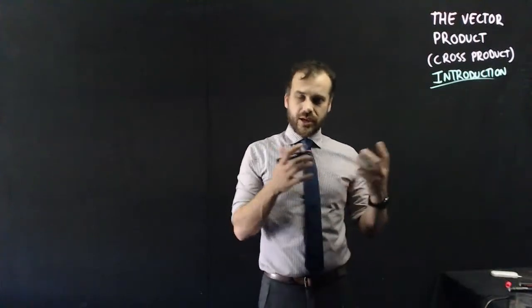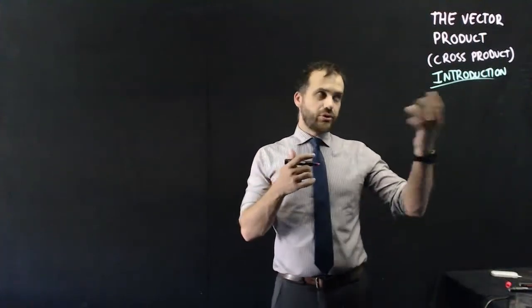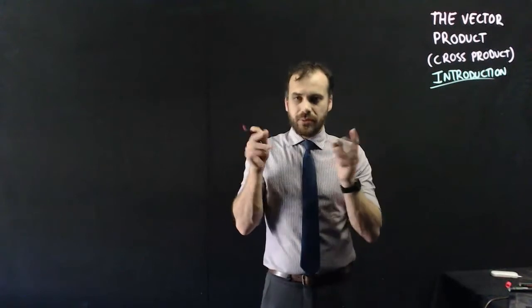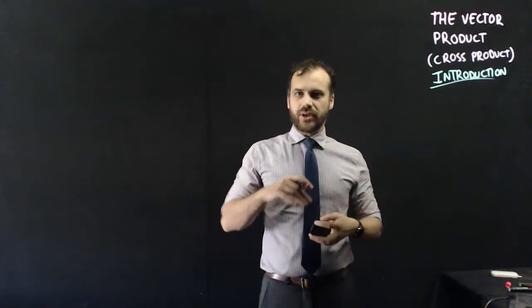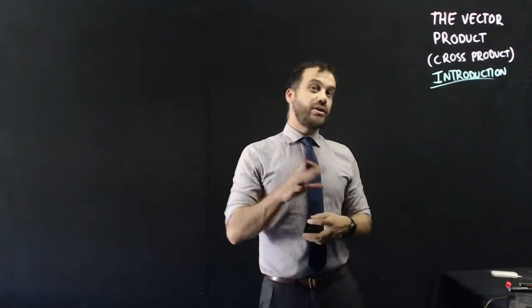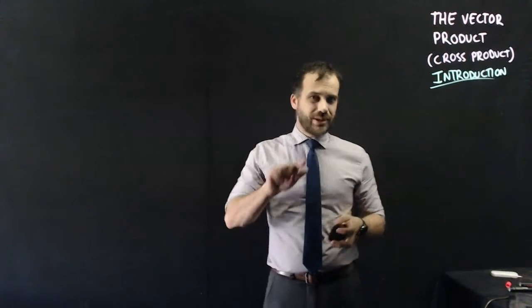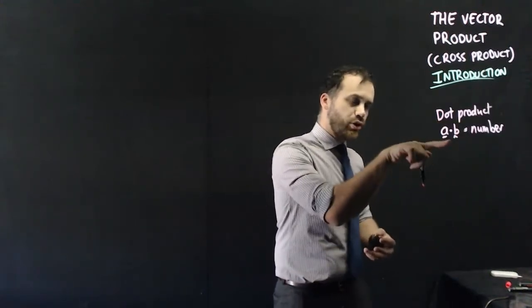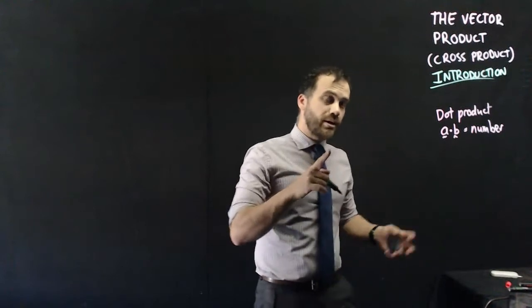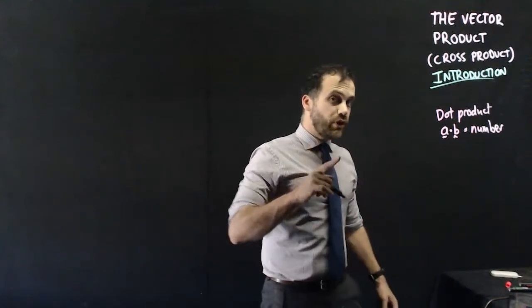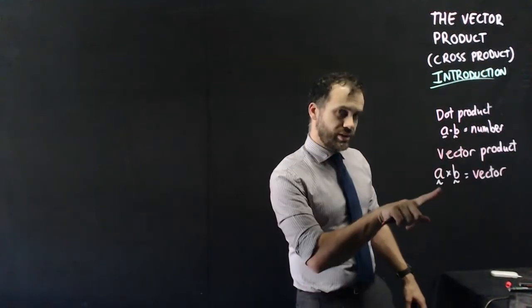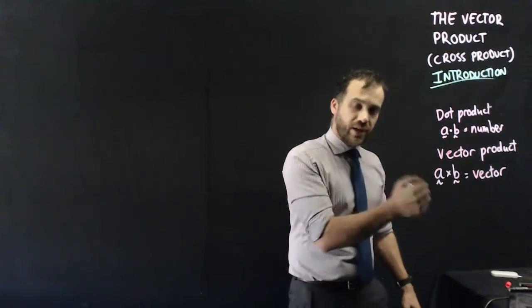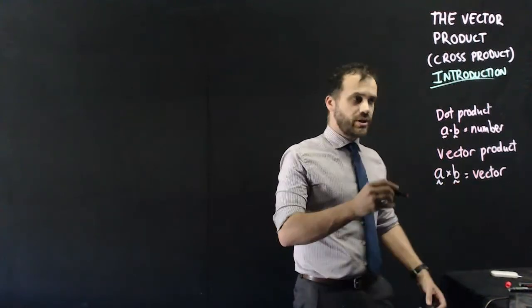We're looking at the vector product, otherwise called the cross product. We're going to take two vectors and multiply them together. You might think you've done that before with the dot product, but when you find the dot product of A·B, you get a number. When you find the vector product, vector A times vector B, you get a vector. That's why it's called the vector product.